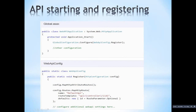Here you can see my global.asax file — this is the application start file. The Application_Start method will be executed upon starting the application. Here I am passing GlobalConfiguration.Configure with WebApiConfig.Register — I am passing this callback function to the Configure method of GlobalConfiguration. This callback function is a static method present in the WebApiConfig.cs file.